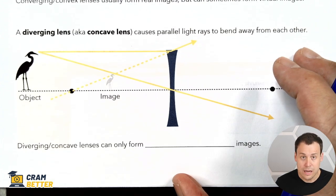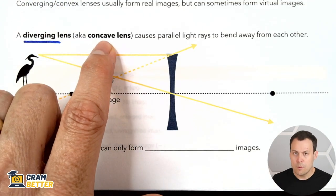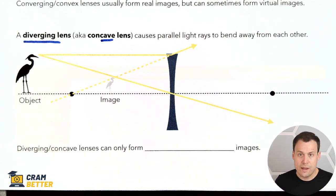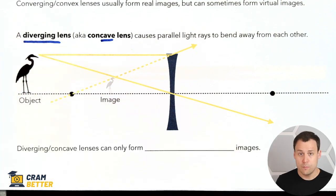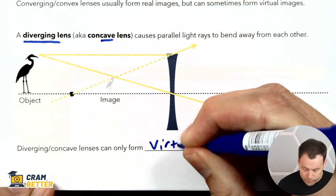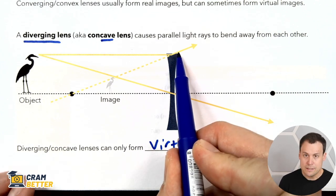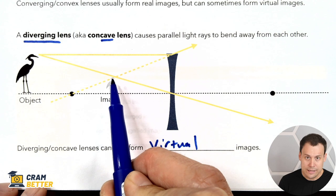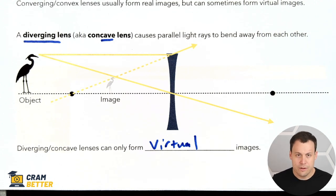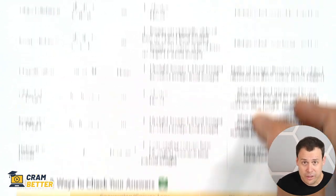A diverging lens is also known as concave — the way to remember that is it looks like a cave that light is going into. A diverging lens makes light rays bend away from each other, so they can never meet up. Since meeting-up rays are what form real images, a diverging lens can only form virtual images. To form the image, you trace back those light rays to see where they would meet in the backward direction. That's your difference between real and virtual images with converging and diverging lenses.